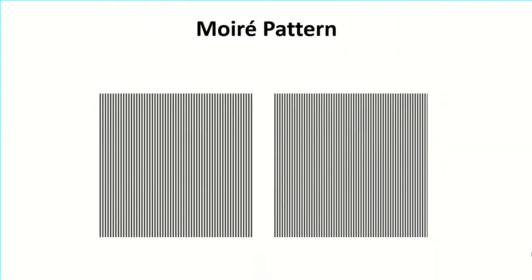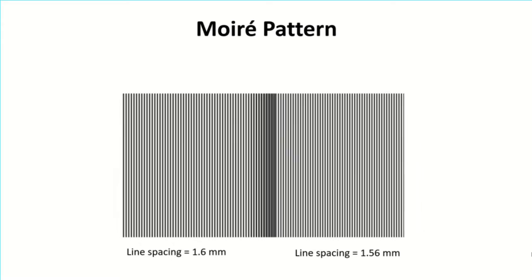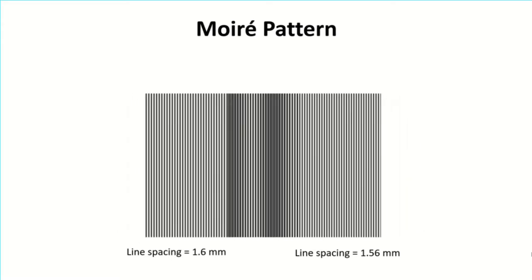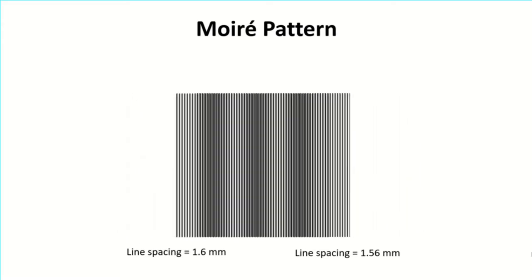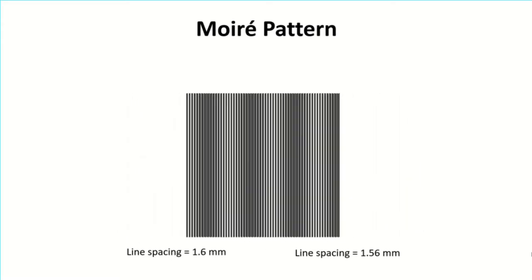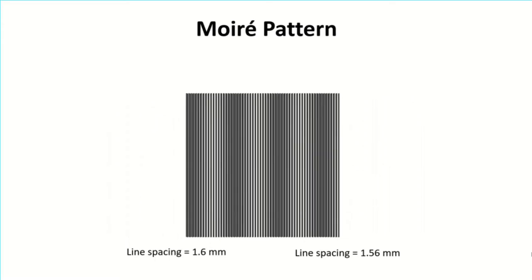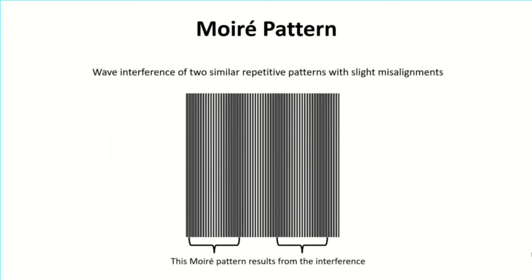Let us see a visual representation of a simple moiré pattern. Consider these two grids of lines. They probably look similar to you, but in reality they have different line spacing. We call the line spacing its pitch. When you move one grid over the other, their translation results in an interference pattern due to the slight difference in pitch. The result of wave interference of two patterns with slight misalignments is a moiré pattern.